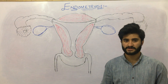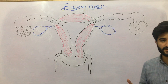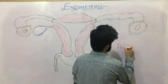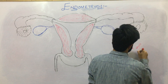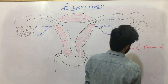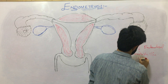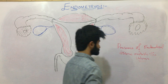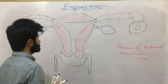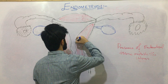Today we study a new topic: endometriosis. Endometriosis is defined as the presence of endometrial tissue outside the uterus — anywhere else in the body. This condition is known as endometriosis.